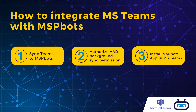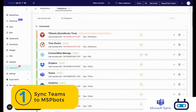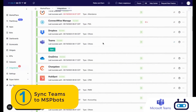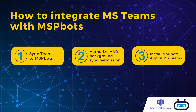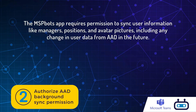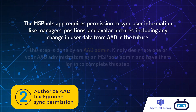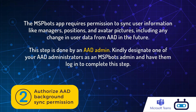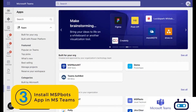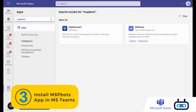Integrating MSPBots with Teams is a breeze. Simply access the app, choose Teams, and Sync. Then authorize Active Directory sync permission. Finally, search for and install MSPBots from your Teams app.